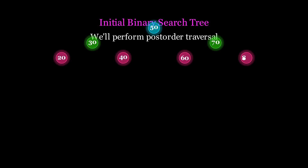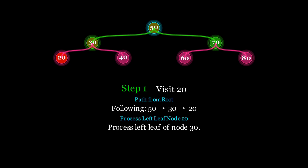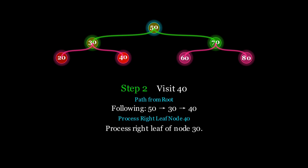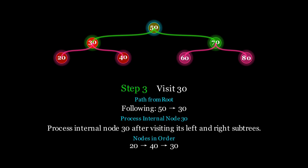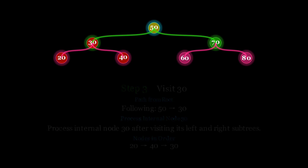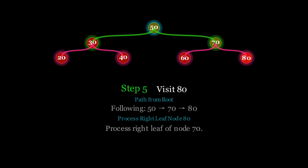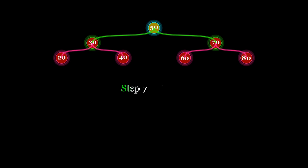Let's visualize the post-order traversal. We start with the left subtree, node 30. We move to its left child 20 — since it has no children, we print it. Then we backtrack to 30 and visit its right child 40. Now that both left and right children of 30 are visited, we print 30 itself. Then we move to the right subtree, node 70. We visit its left child 60, then its right child 80. Since both subtrees are processed, we print 70. And finally we print the root node, 50.